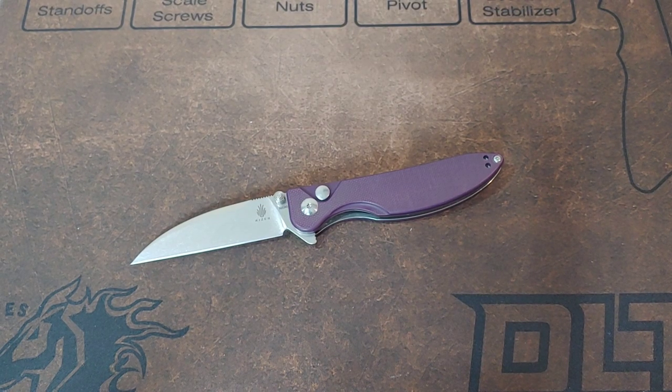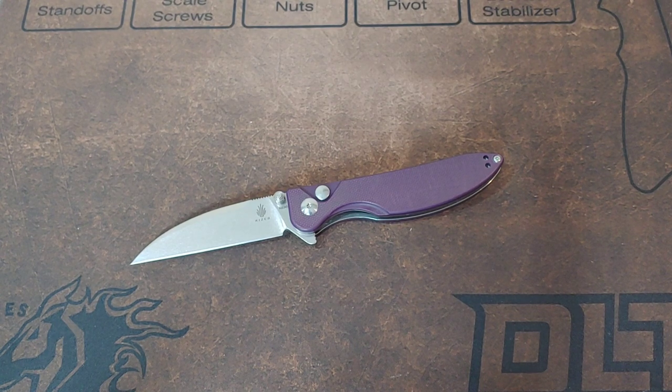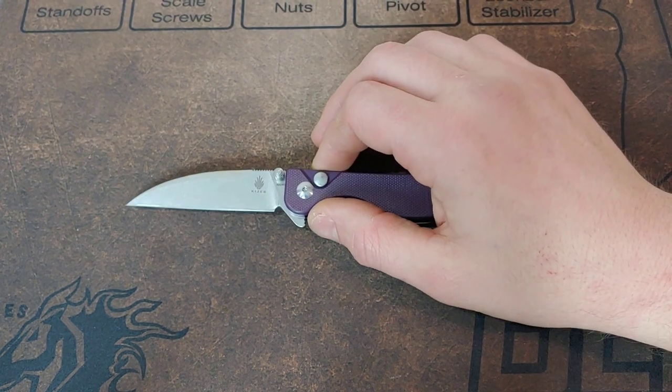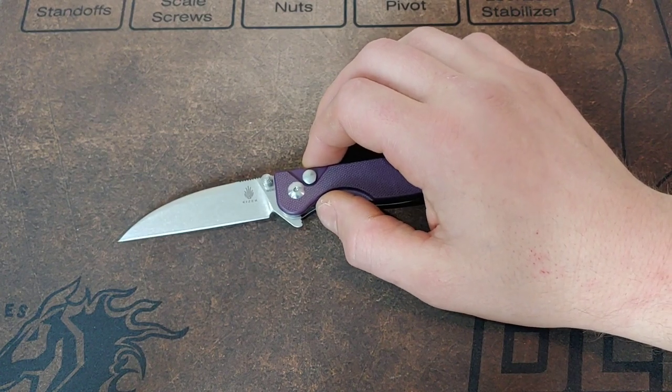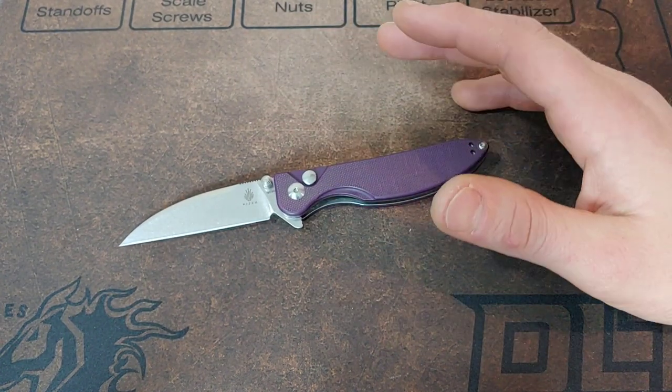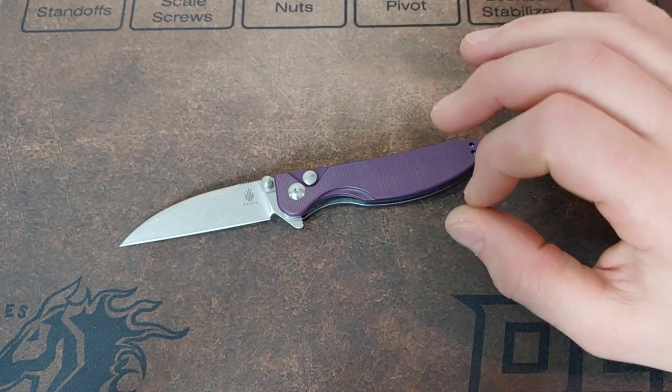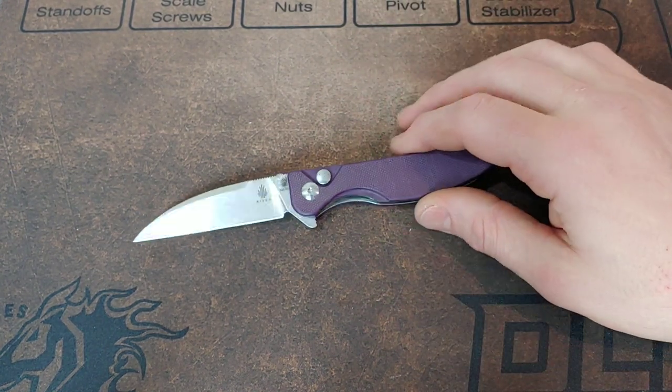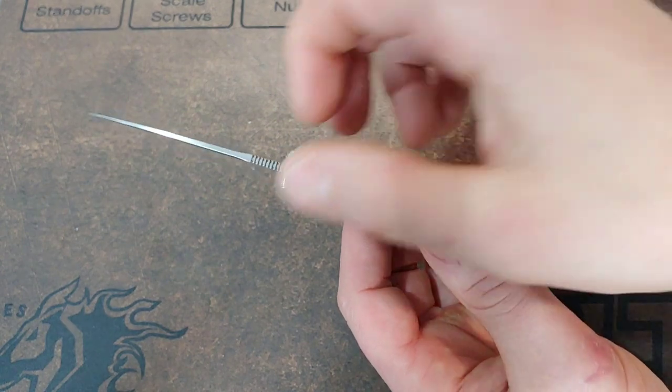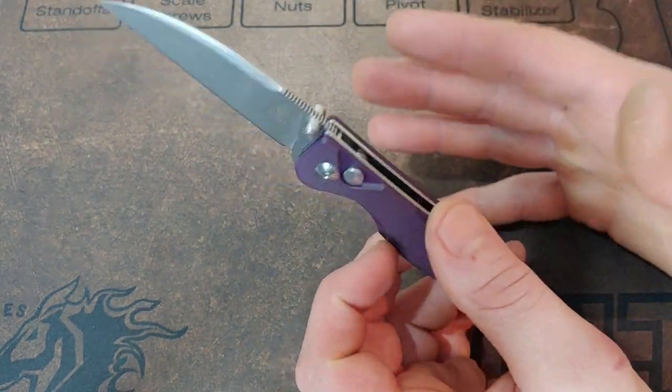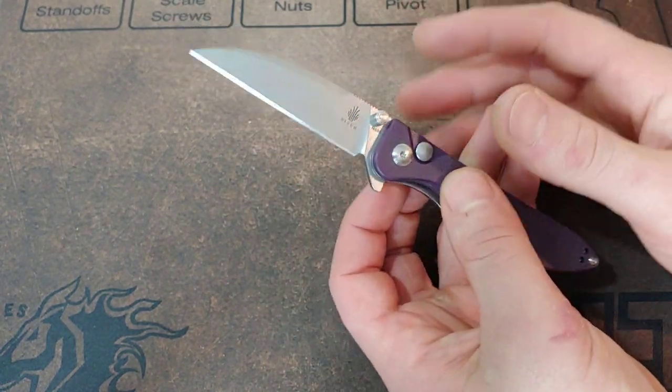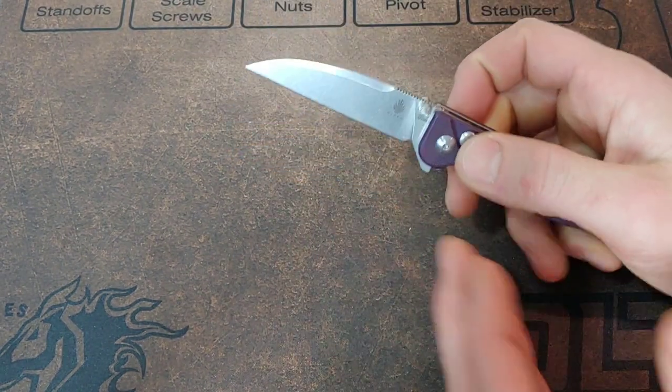It slices through cardboard really good. It has a very thin blade stock. Now, the blade stock is very thin. Behind the edge could be a little thinner, but because the blade stock is so thin, it goes through materials really nicely. Now, it is a little different because of the blade being so thin compared to the thickness of the handles, but it works. It kind of gives you a lot of leverage, especially behind the tip.